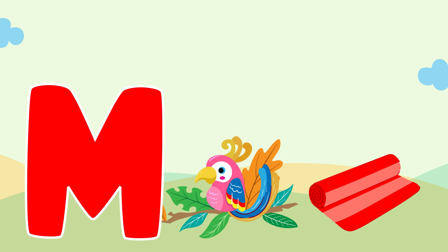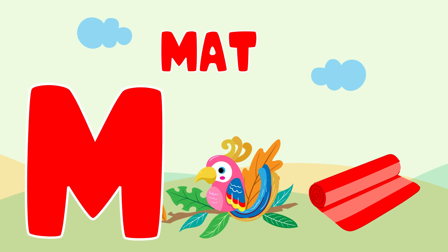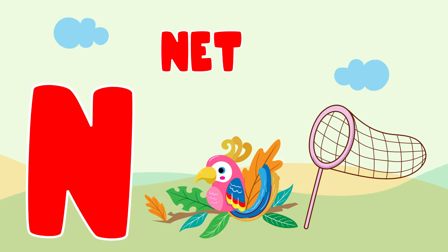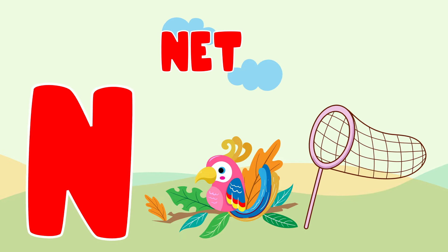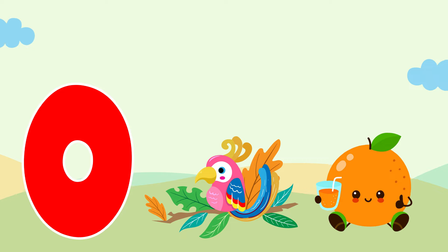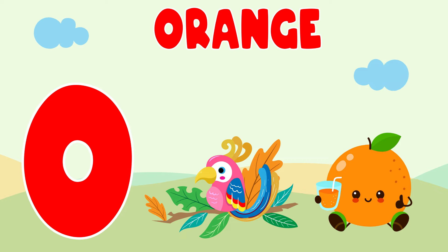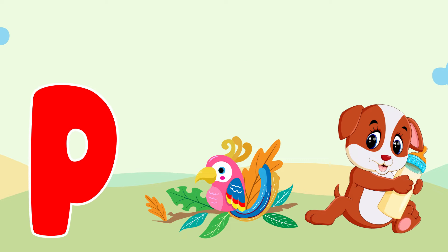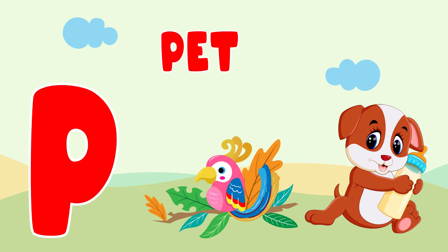M is for mat, m-m-mat. N is for net, n-n-net. O is for orange, o-o-orange. P is for pet, p-p-pet.